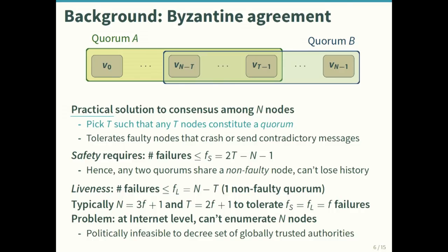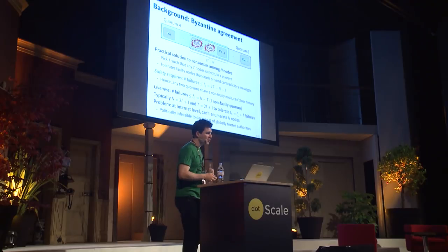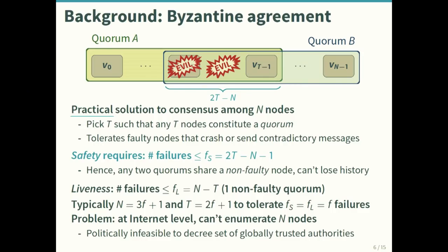To solve internet-level consensus, a first cut might be to use Byzantine agreement, which is a practical solution to consensus in a closed system of n nodes. You pick a quorum size t, and any t nodes constitute a quorum; you can achieve consensus even if some nodes are faulty and behave maliciously. For safety — never losing track of transactions — any two quorums must share at least one non-faulty node. If quorum A and quorum B overlap at 2t minus n nodes, the most failures you can withstand while guaranteeing safety is 2t minus n minus 1.